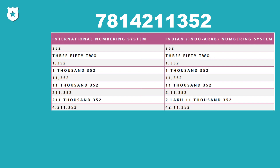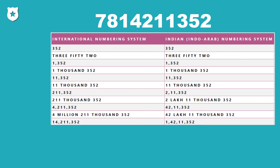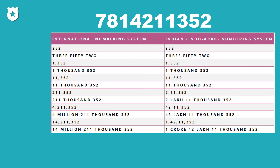Adding the next digit, the number in the international numbering system is 4,211,352 and in the Indian system it is 42,11,352. In the international numbering system this reads as 4,211,352, and in the Indian numbering system it reads as 42,11,352. Adding yet another digit gives 14,211,352 in the international system and 1,42,11,352 in the Indian system.